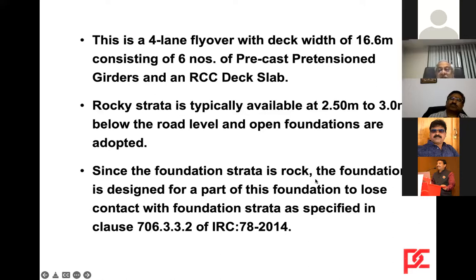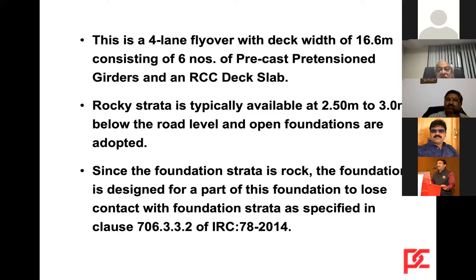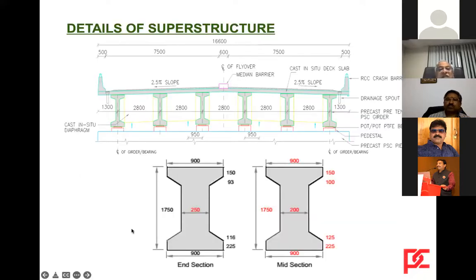Since the foundation strata is rock, the foundation is designed allowing a part of the foundation to lose contact with the foundation strata, as specified in IRC 78. The cross section uses six girders with total width 16.6 meters and span 4 × 30 meters. These are typical precast pre-tensioned girders with top and bottom flanges of 900 mm width, web thickness 200 mm, and overall height 1750 mm.